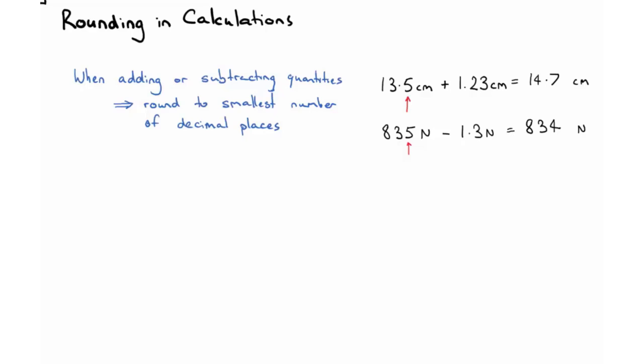Our second rule is when multiplying or dividing quantities, we round to the smallest number of significant figures.